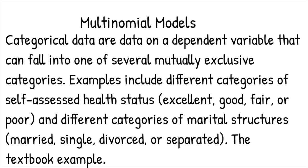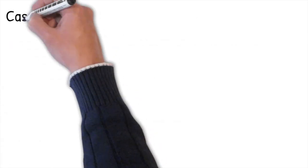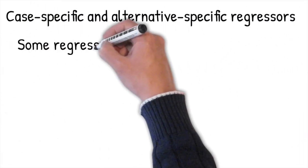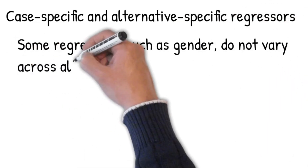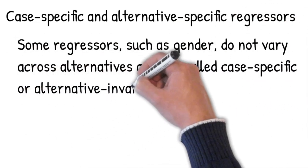In this chapter, we use an example of the choice of fishing mode. An individual chose to fish using one of four possible modes: from the beach, from the pier, from a private boat, or from a charter boat. Thus, the dependent variable fishing mode has four categories. For the explanatory variables, there are case-specific regressors and alternative-specific regressors.